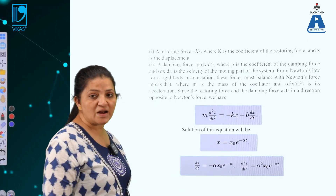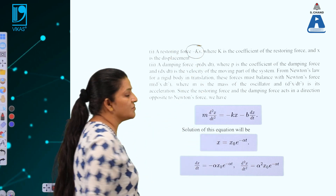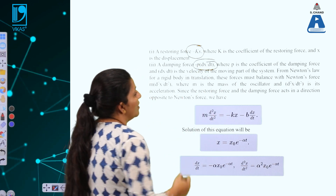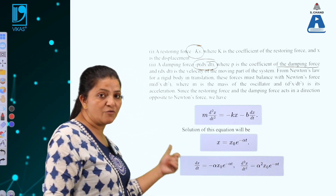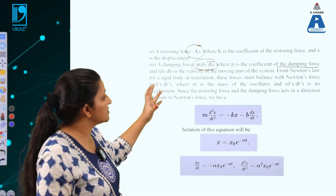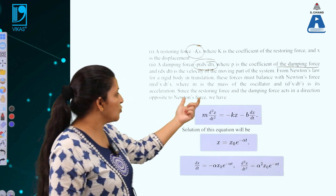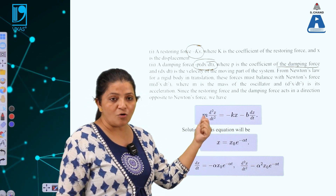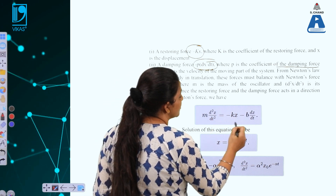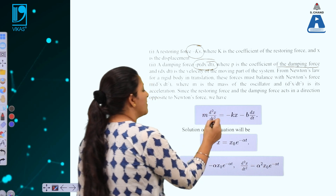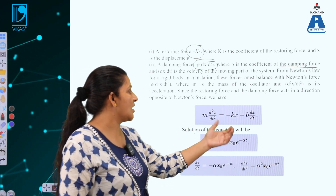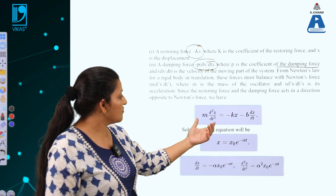The forces acting on the system are: the restoring force −kx, acting opposite to the displacement; and the damping force given by −p·(dx/dt), where p is the coefficient of damping. Due to this damping component, after some time the body regains its original position. When the restoring force and damping force balance the applied force, there is an equilibrium position, and the forces balance the applied force at that point.